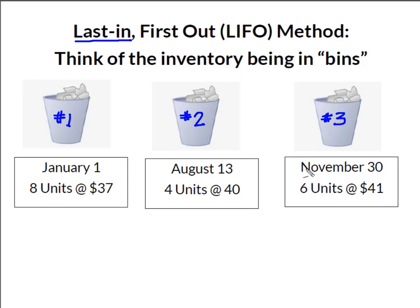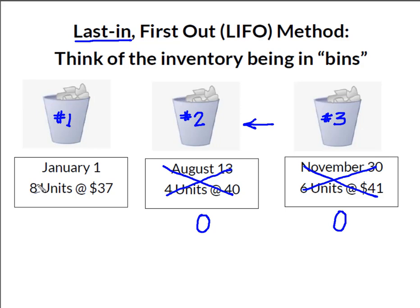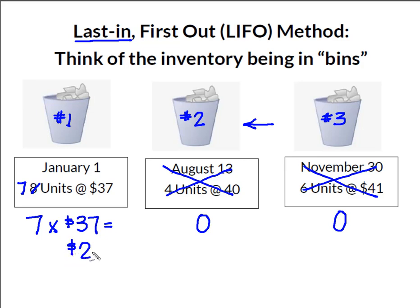I need to account for 11 units. I'm going to sell all six units from bin 3 leaving none. Then I go back to bin 2 and sell all four units, which gets me to 10. I only need one more unit, so I take one out of bin 1 — 6 plus 4 plus 1 gives me 11 — leaving seven units in bin 1. Seven times $37 gives me an ending inventory under last-in first-out of $259.